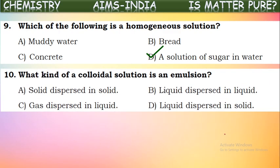What kind of colloidal solution is an emulsion? An emulsion is a mixture formed by mixing two immiscible liquids — one liquid is dispersed into another. So an emulsion is a colloidal solution formed when a liquid is dispersed in another liquid. Liquid-in-liquid colloidal solutions are called emulsions.